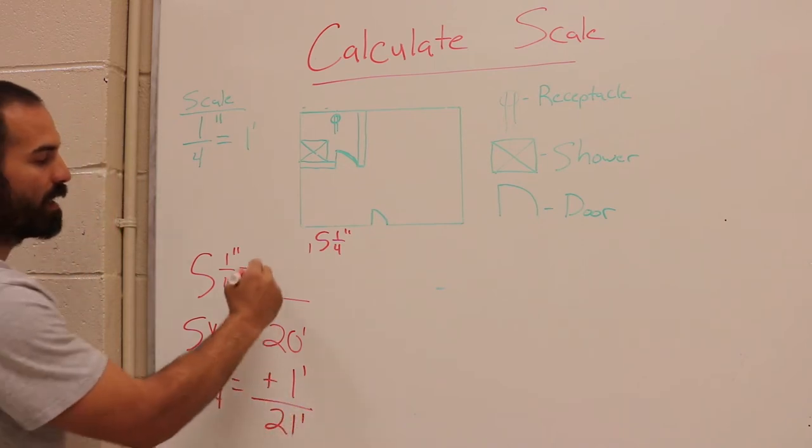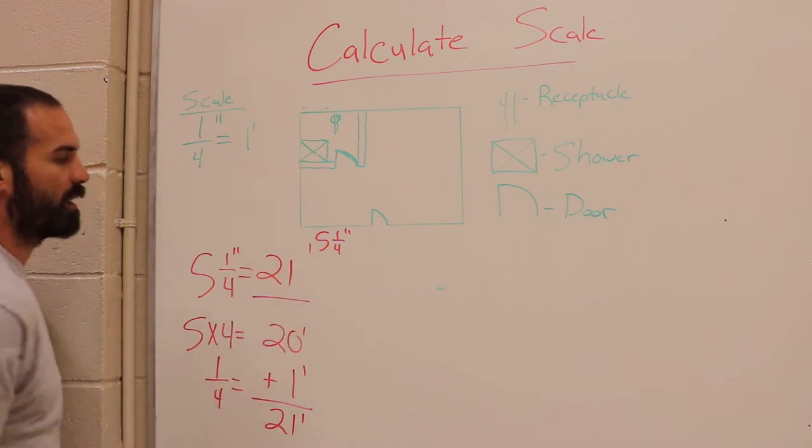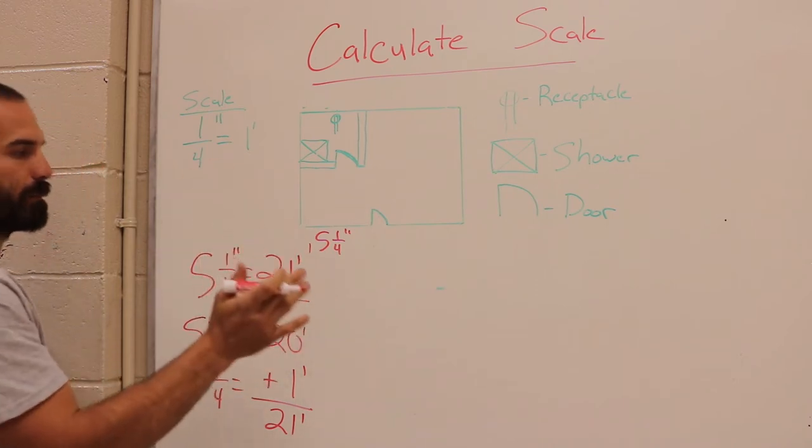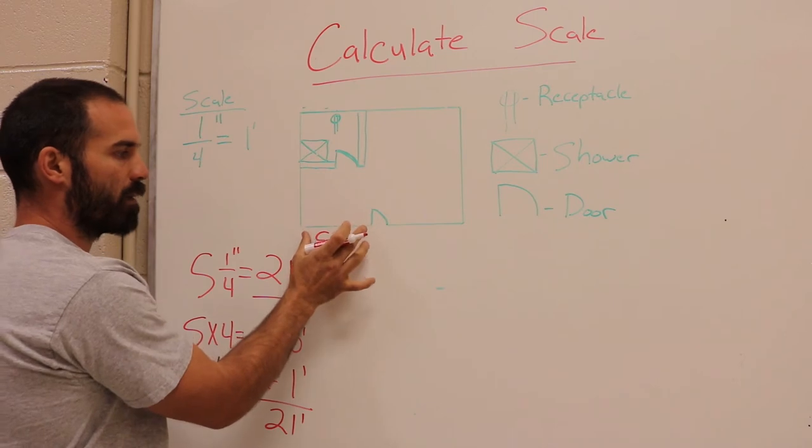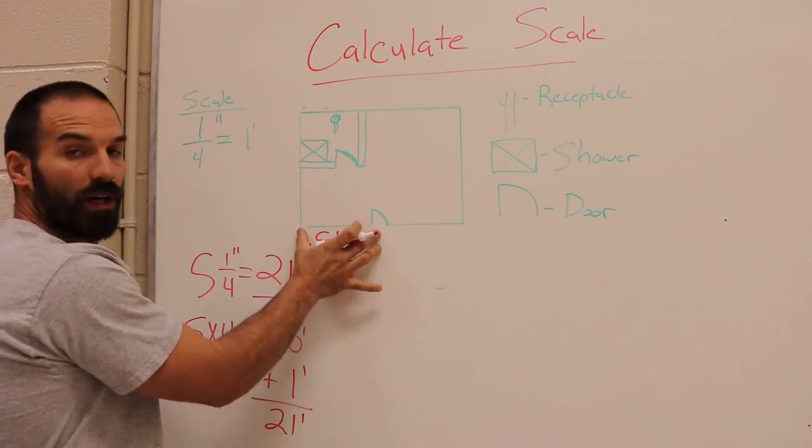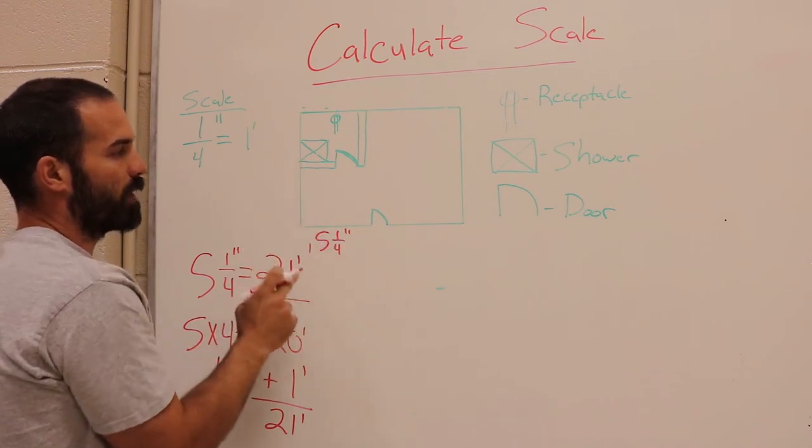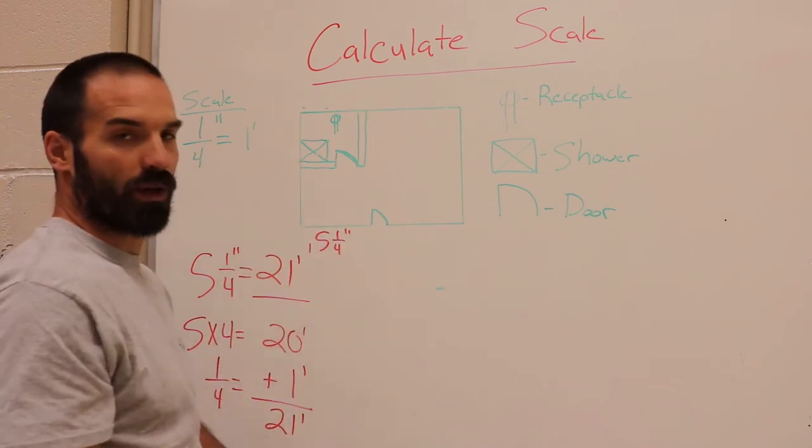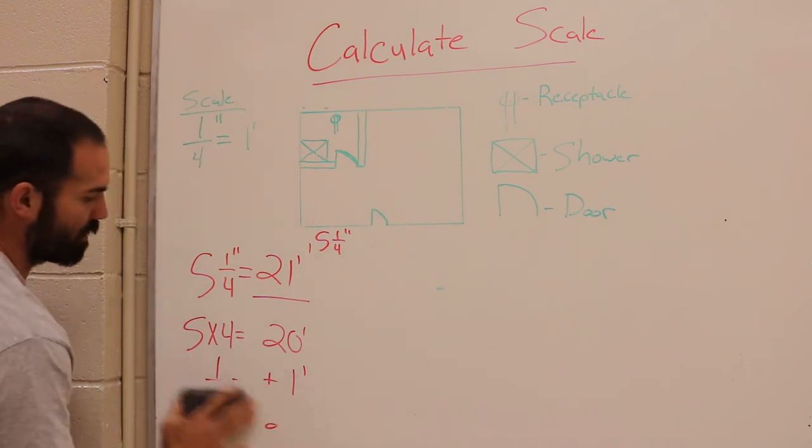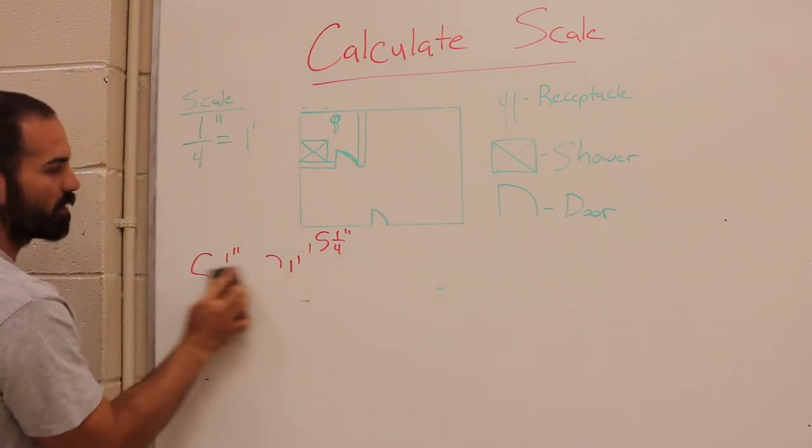So right here I would write 21 feet. So on paper it's 5 1/4 inches; in real life the carpenter would frame that door opening 21 feet from the corner of the building. So that's one example, that's a pretty simple example. Here, let's say I'm going to move on to an electrician.